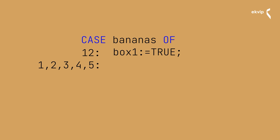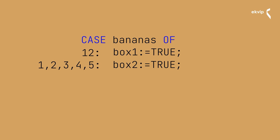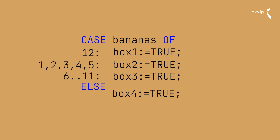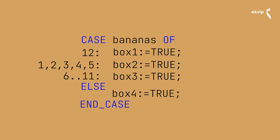For example: 1, 2, 3, 4, 5 — colon — box2 equals true. Or you can define a certain range of values: 6..11 — now the instruction behind the colon is executed for the values from 6 to 11. If none of the values apply, you can optionally use an ELSE to define an instruction executed in this case. The instruction is closed with an END_CASE. You could also use other instructions inside the CASE instruction. We already used the CASE instruction in our video about enums.